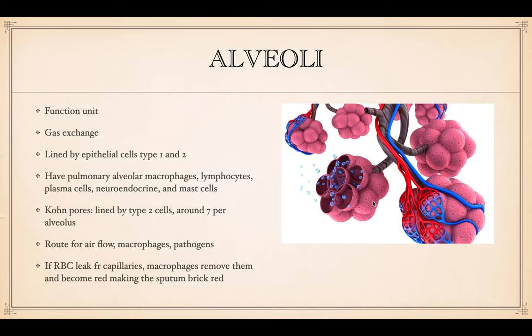The pores of Kohn, as you can see — all these little dots — are lined by type 2 cells, and there are about seven per alveolus. They play a role in airflow, macrophages, and pathogens. If red blood cells leak from the capillaries into the pores, the macrophages will remove them, those cells turn red, and the sputum will appear red. Epithelial type 2 provides the surfactant to keep the alveoli inflated, while type 1 is a barrier cell.